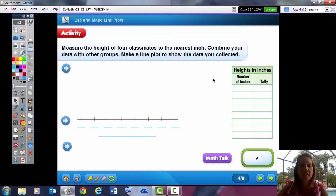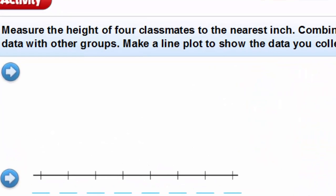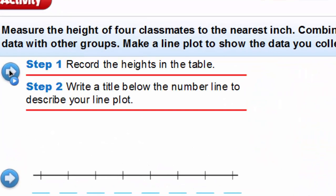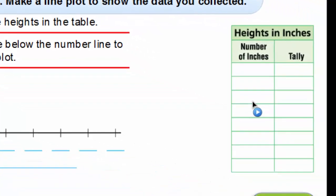We're going to do something similar to this tomorrow in class, but let's do one more activity together. It says measure the height of four classmates to the nearest inch, combine your data with other groups, make a line plot to show the data you collected.